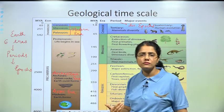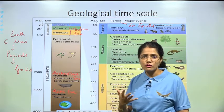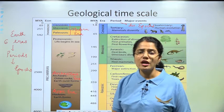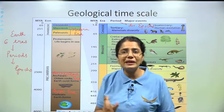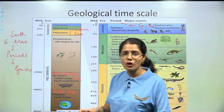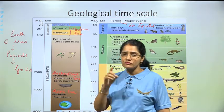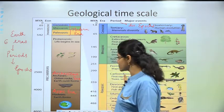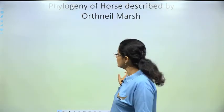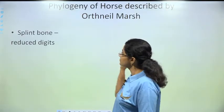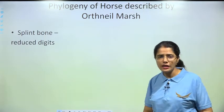Before moving into the phylogeny of horse, we need to understand a term called splint bone. The phylogeny of horse was described by Othniel Marsh.